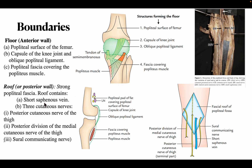The roof is formed by the strong popliteal fascia. The roof also contains the short saphenous vein and cutaneous nerves.